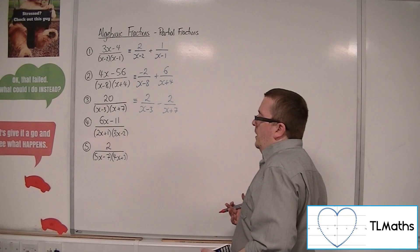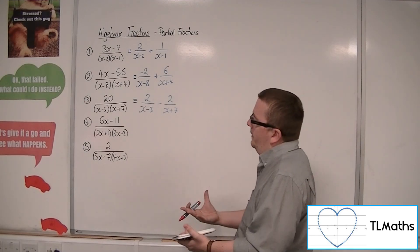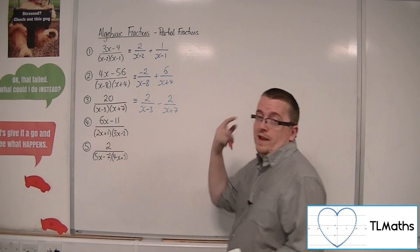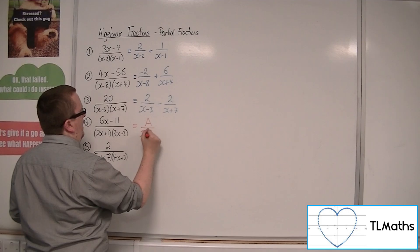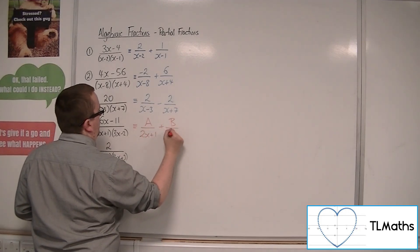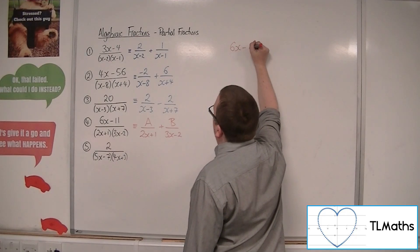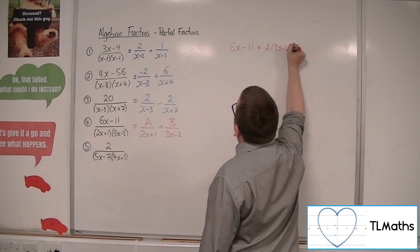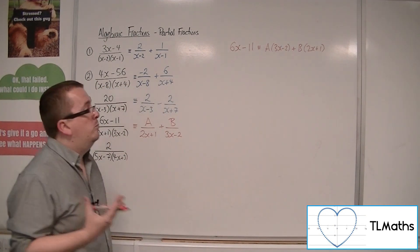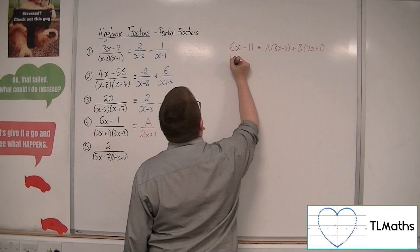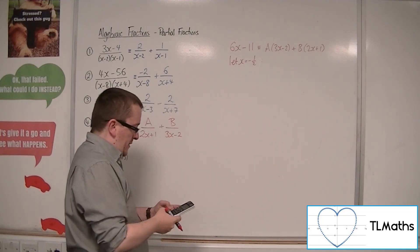Number 4: (6x - 11) over (2x + 1)(3x - 2). In all the previous examples we just had a singular x, not a 2x or 3x, but the same process applies. It's still A over (2x + 1) plus B over (3x - 2), giving 6x - 11 equals A(3x - 2) plus B(2x + 1). To knock out the first bracket, we let x be minus one half.